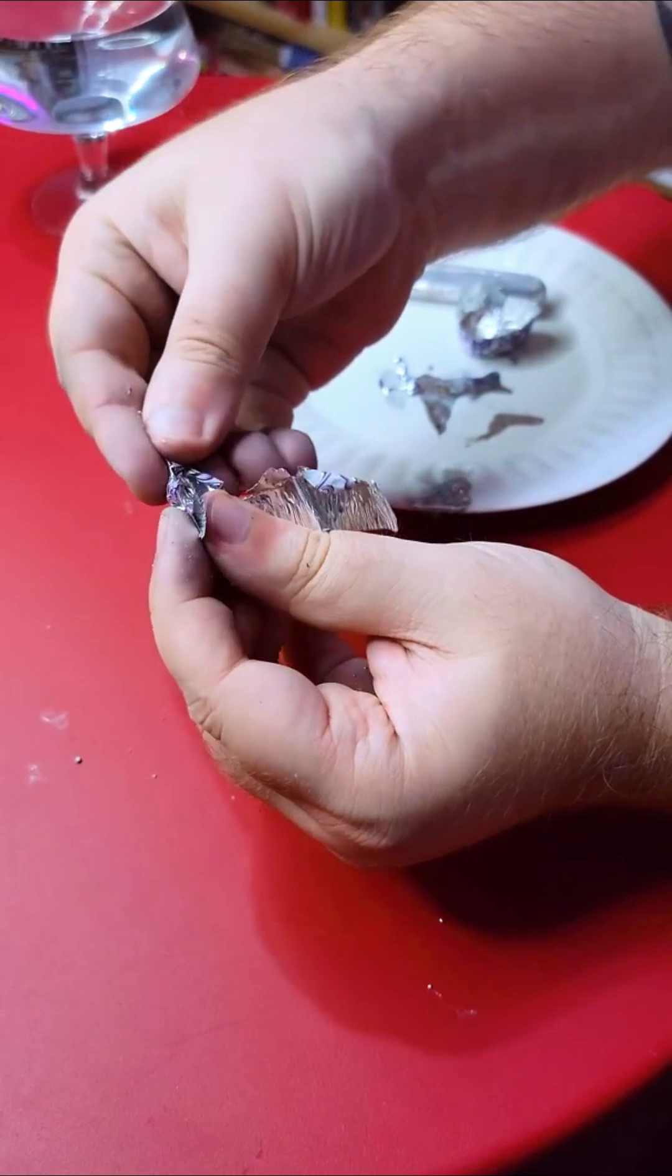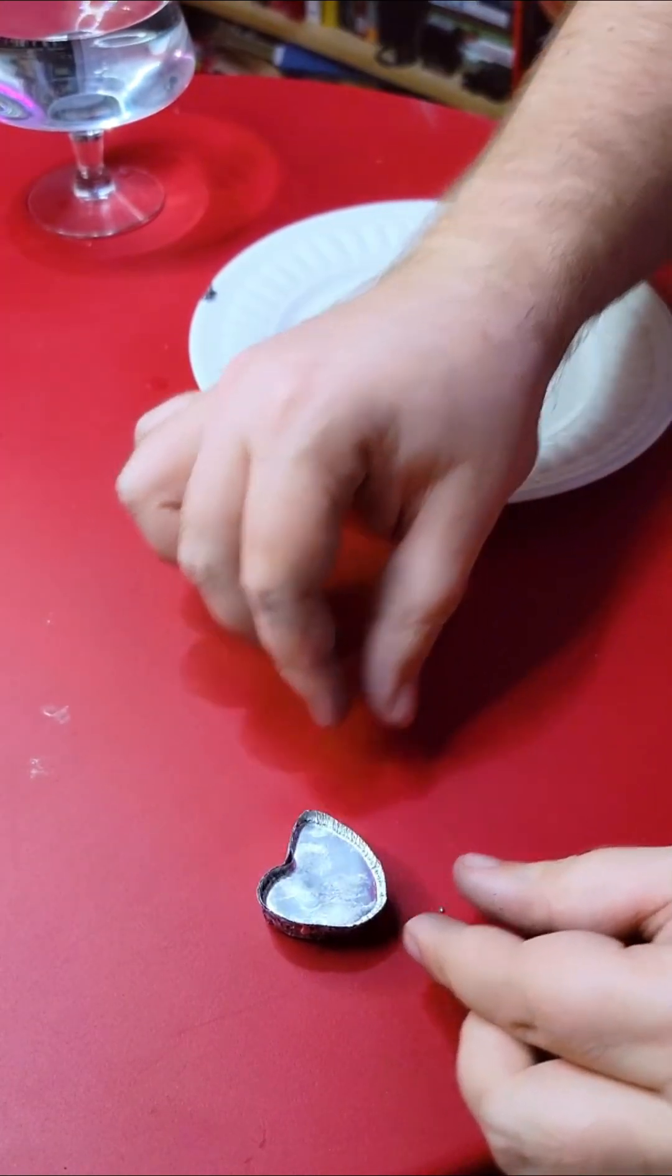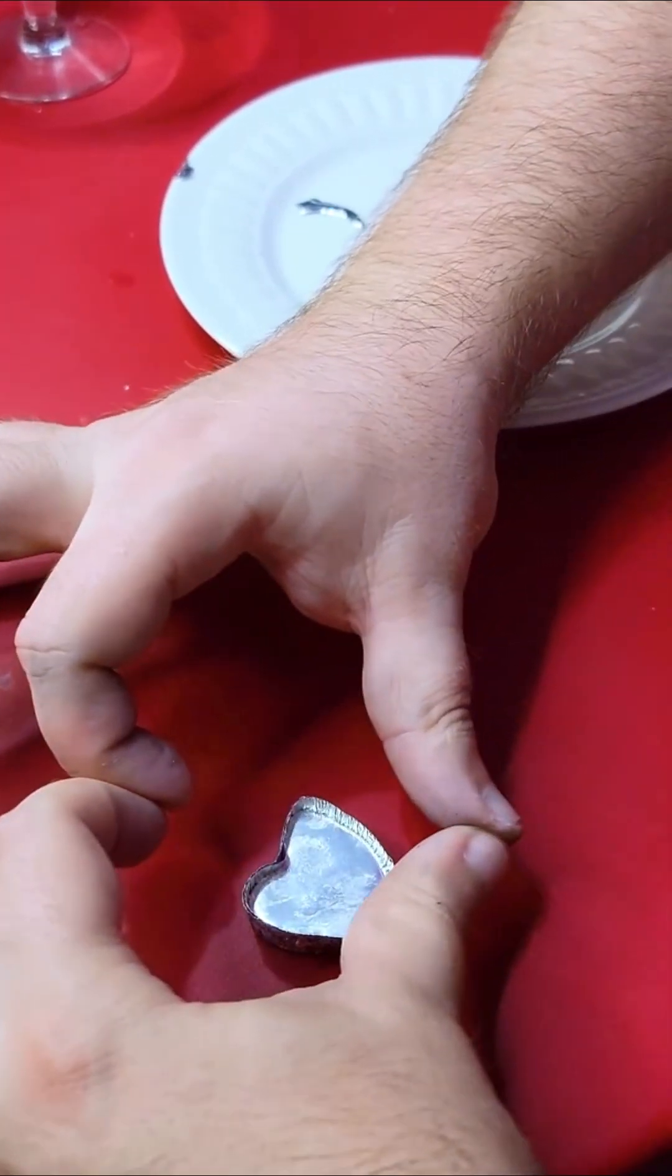Gallium acts like a liquid, but when you touch it, it feels like a solid. This is because its density is six times that of water.